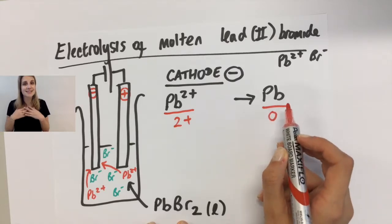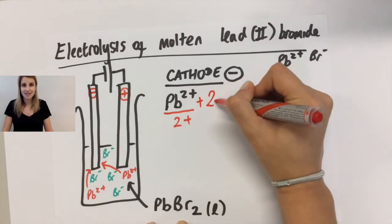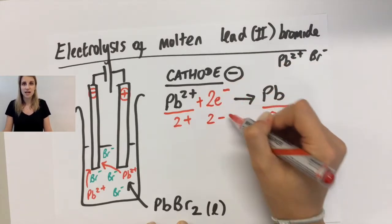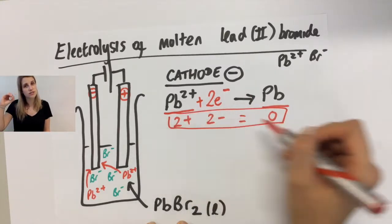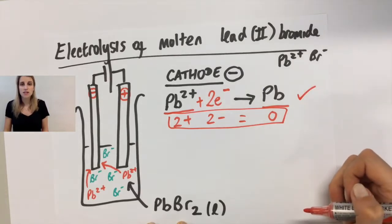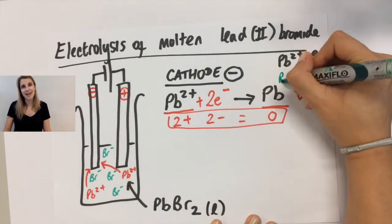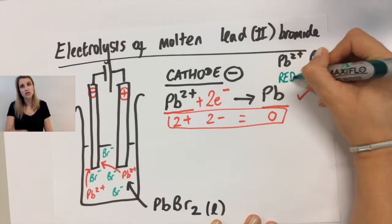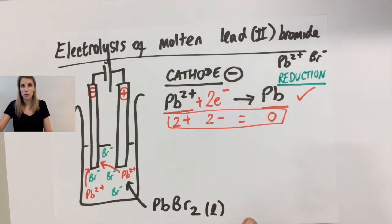If the only thing I can add is electrons, which are negatively charged, how can I balance this up? Well, the only way to fix it is to add two electrons to the left hand side, because what happens then is that they cancel out and they give you a charge of zero, and zero balances with the right hand side. So I'm going to add my electrons there. We call this reduction, which is a word you've come across before. Reduction means a gain in electrons. So the Pb2+ gained two electrons to become Pb and we call that reduction.